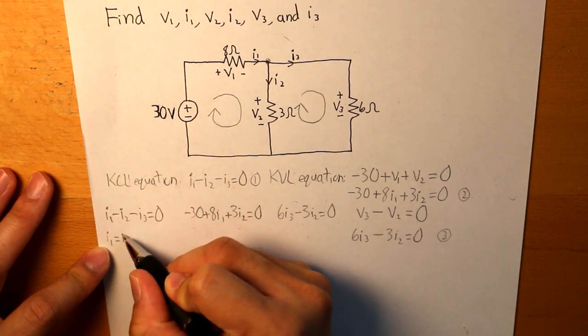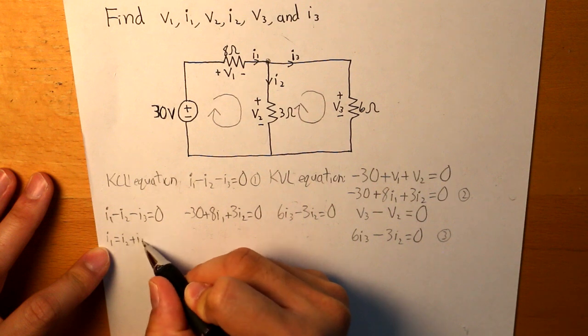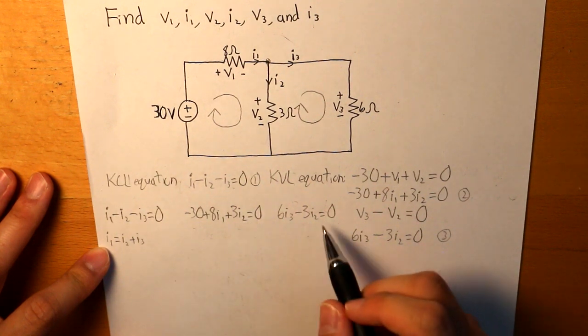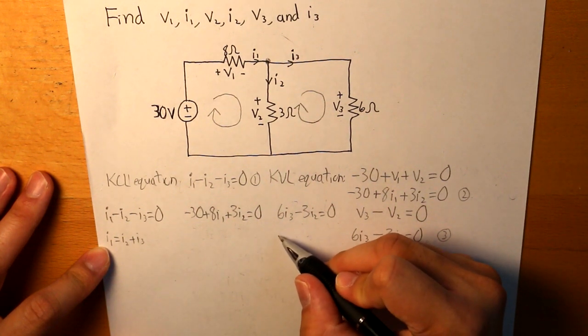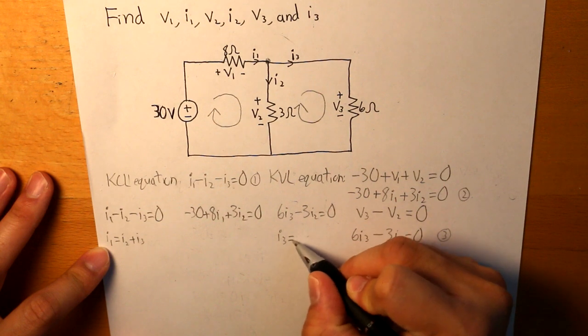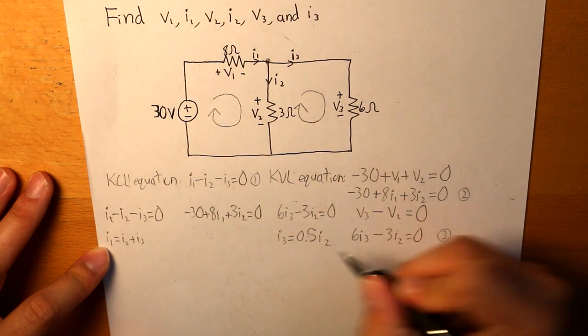And I1 is equal to I2 plus I3. In this equation right here, we have I3 is equal to 0.5 times I2.